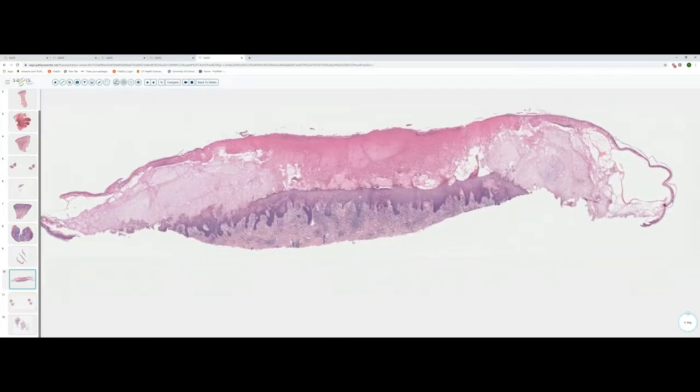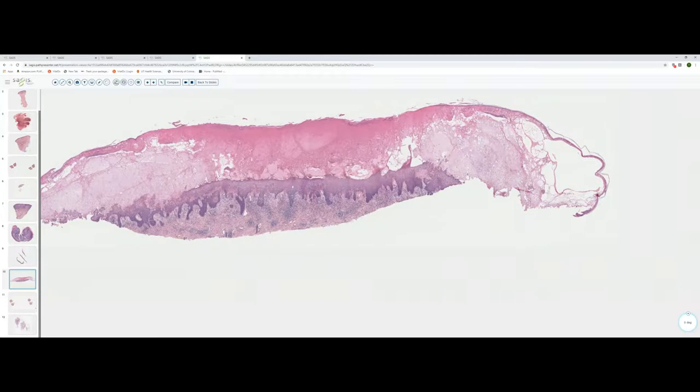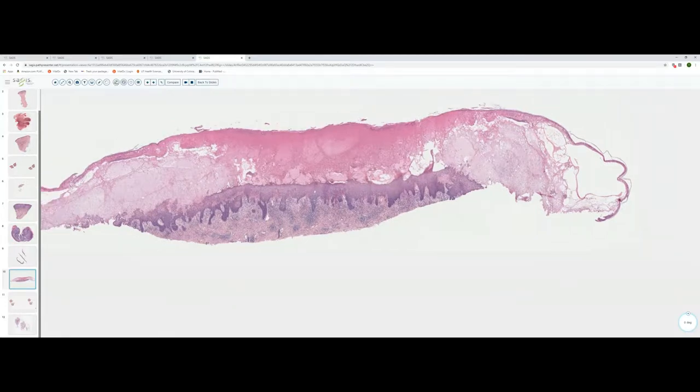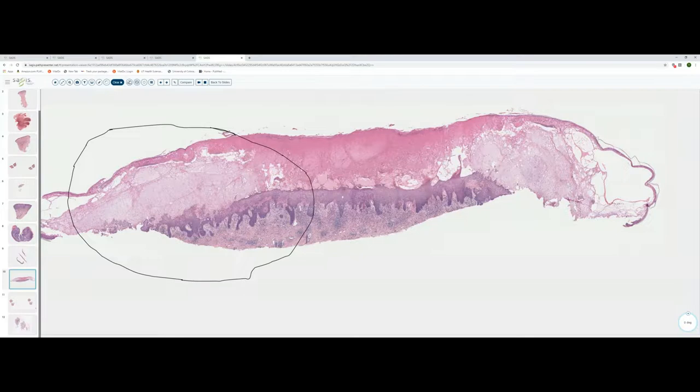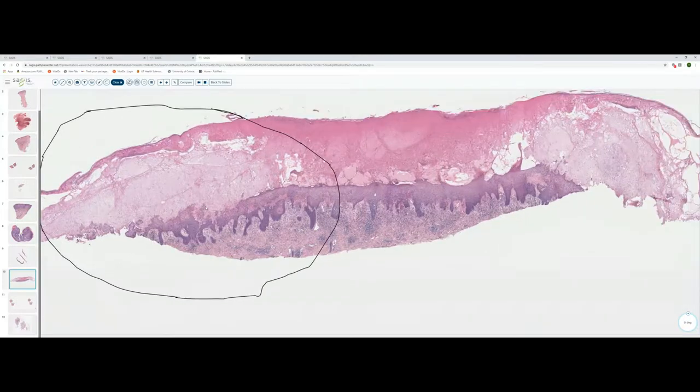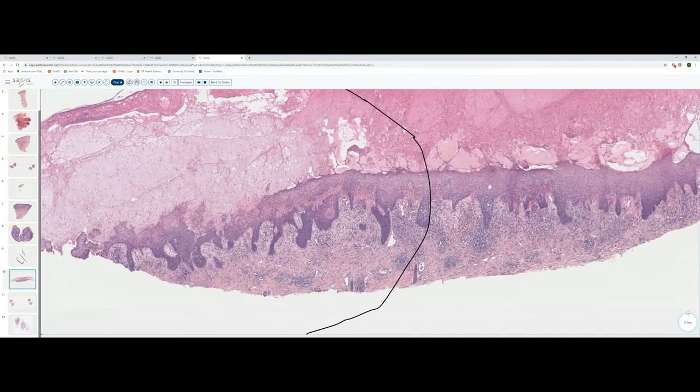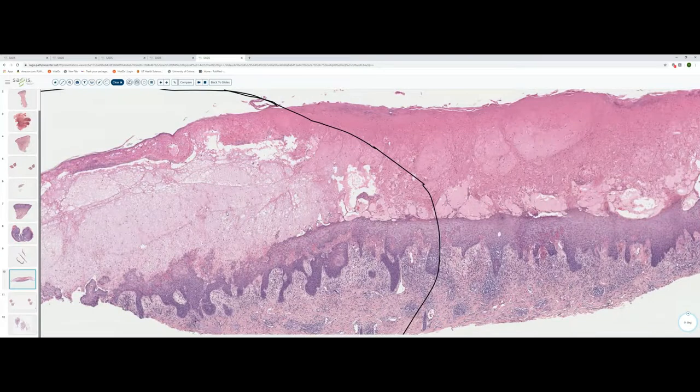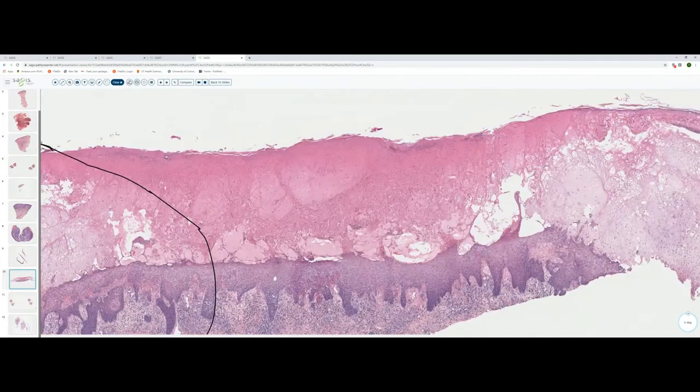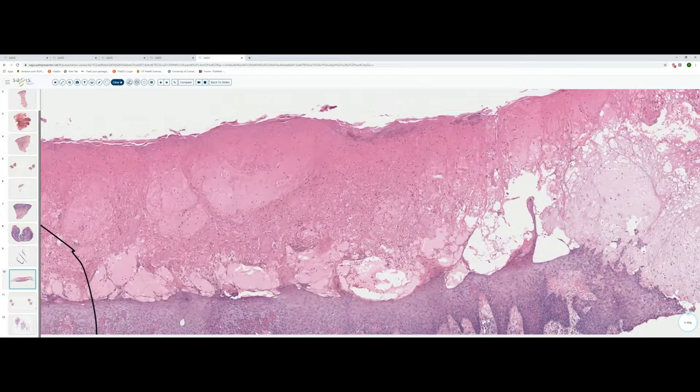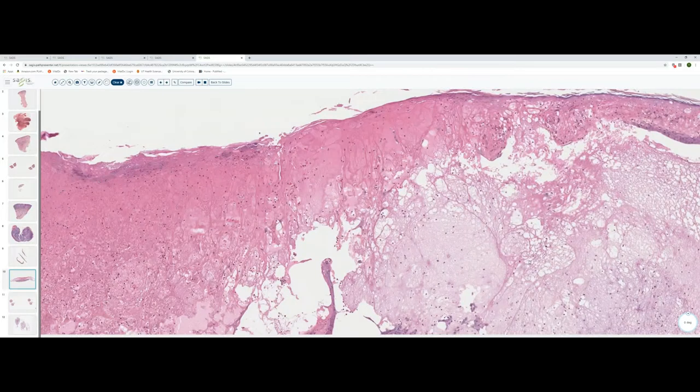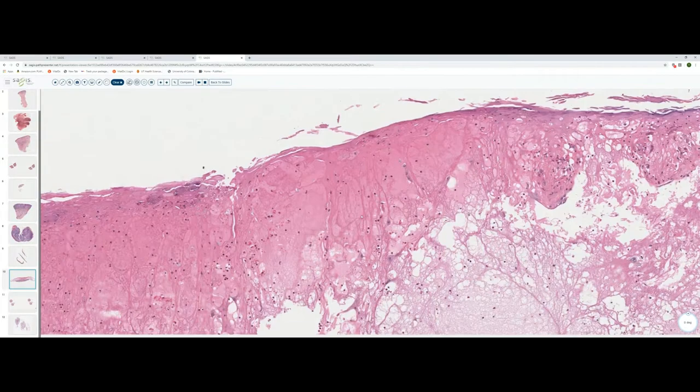Moving on to slide ten. Slide ten is a shave biopsy. And one could see a fairly brisk inflammatory infiltrate within the dermis. Obviously the most striking change is within the epidermis. And one can see a very large intraepidermal vesicle here within the epidermis. There may be some evidence of re-epithelialization here. And you remember when we met last week, we talked about the fact that when you assess an intraepidermal vesicular dermatitis, one of the crucial determinants is how this blister formed.